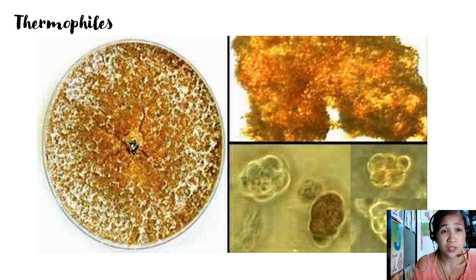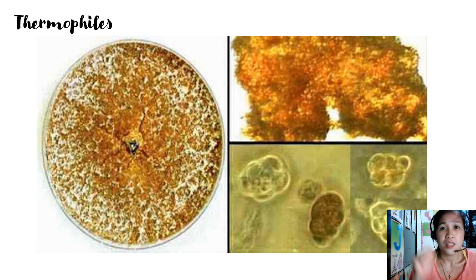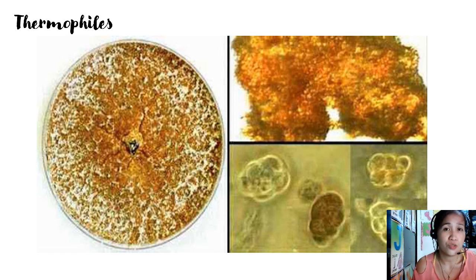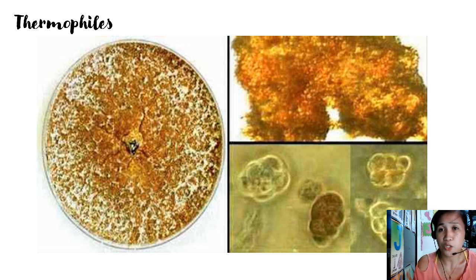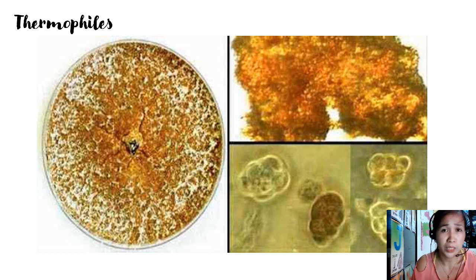The next group of archaea bacteria are the thermophiles. This group can live in places with high temperature. These areas include volcanic hot springs with temperatures from 80 to 110 degrees Celsius. They also inhabit small deep sea openings where hot water with temperatures higher than 250 degrees Celsius comes out.